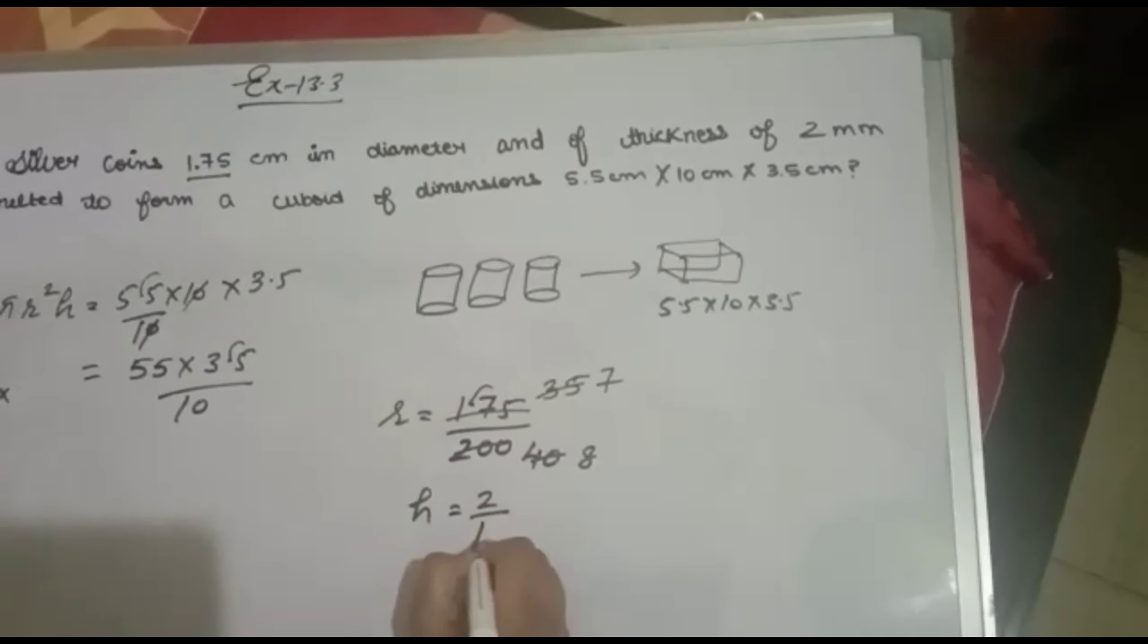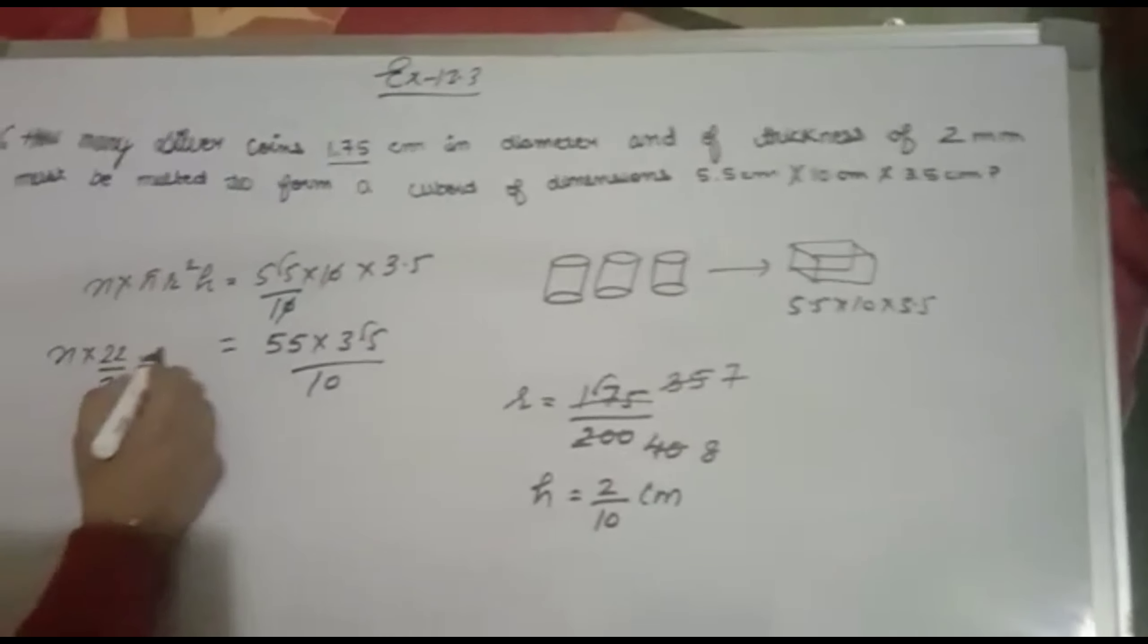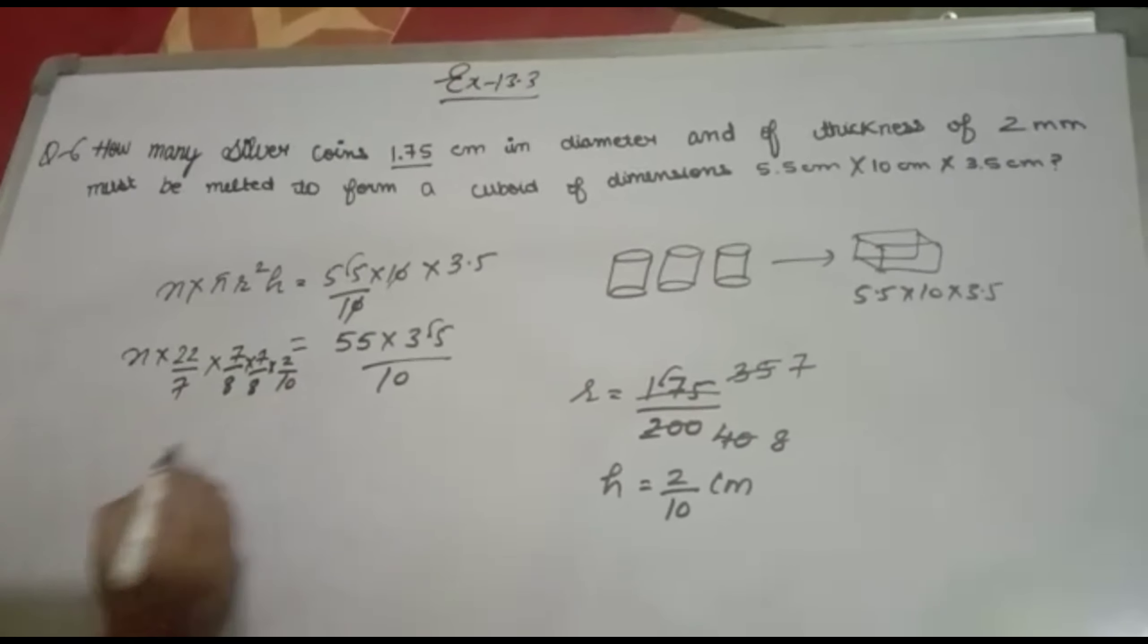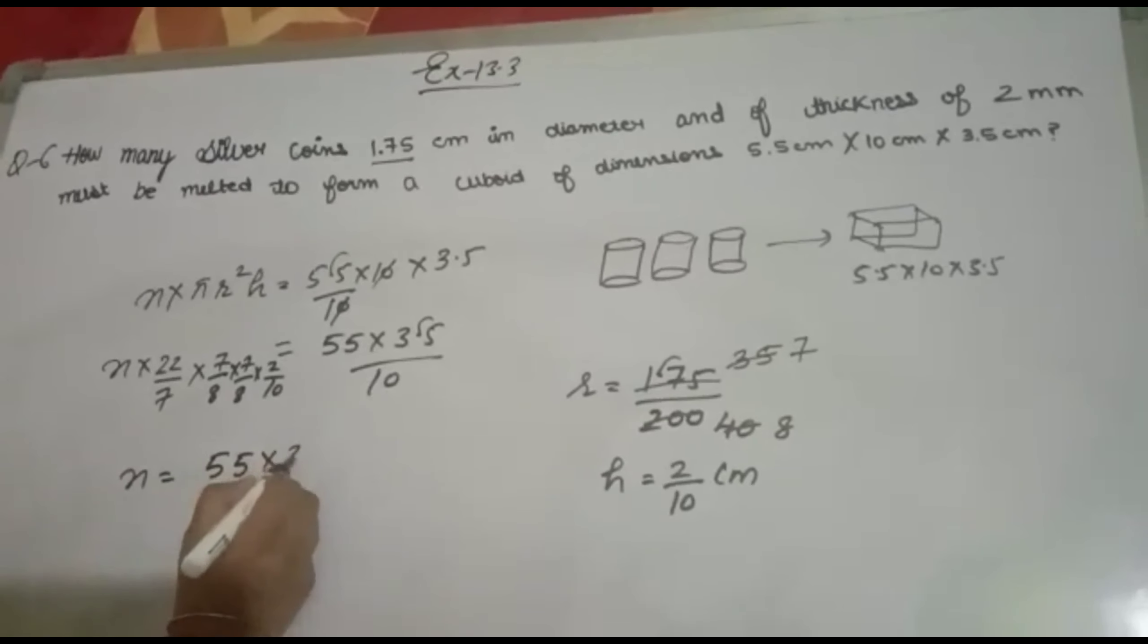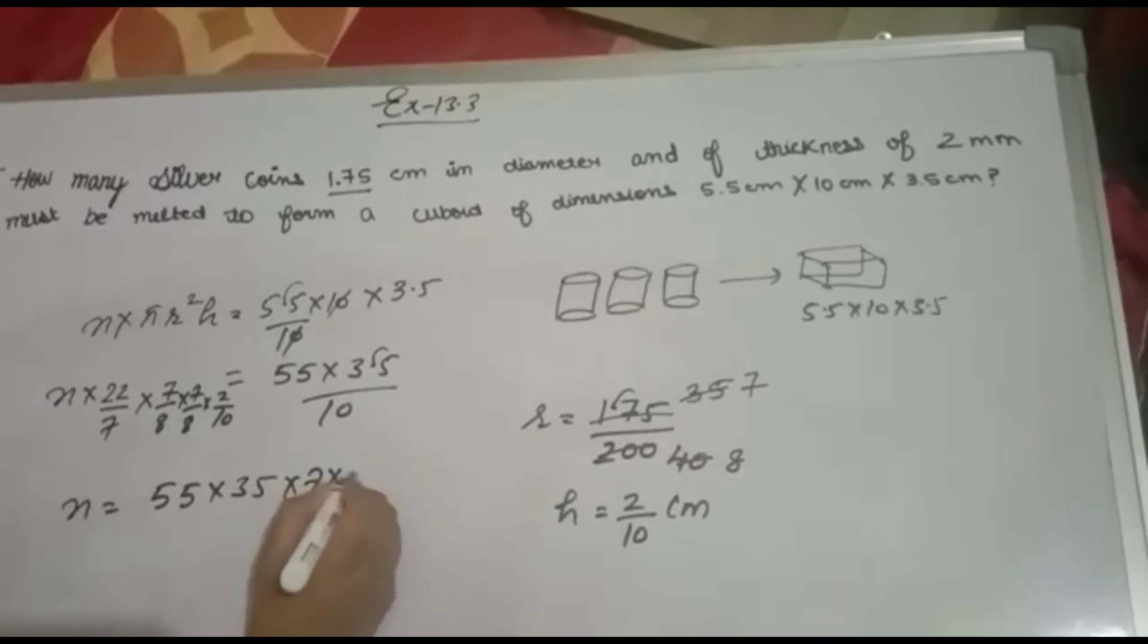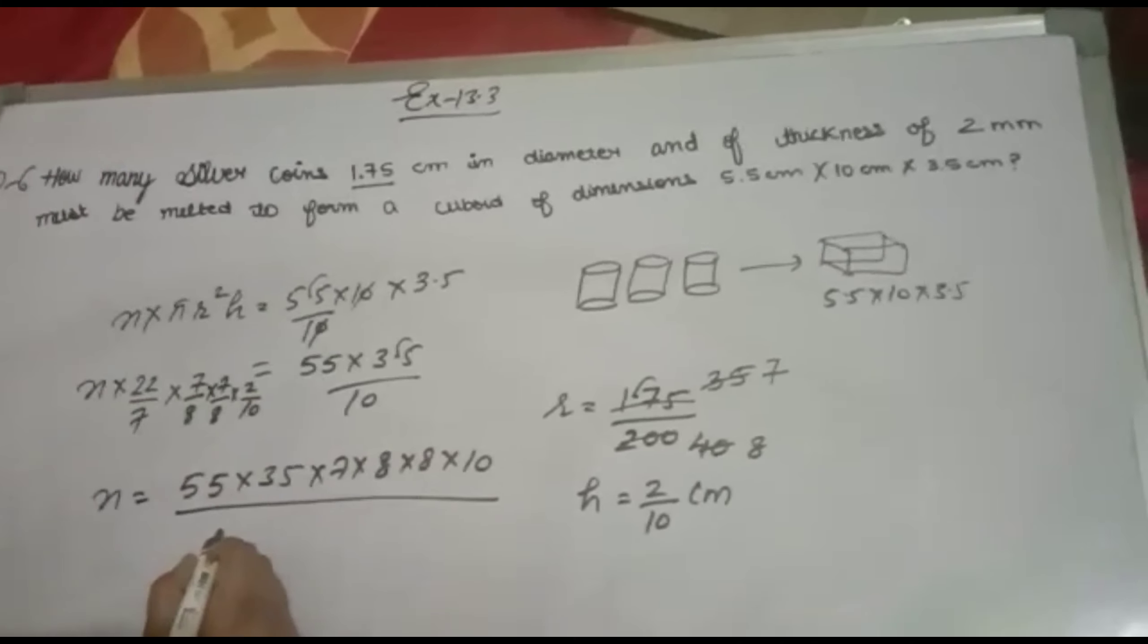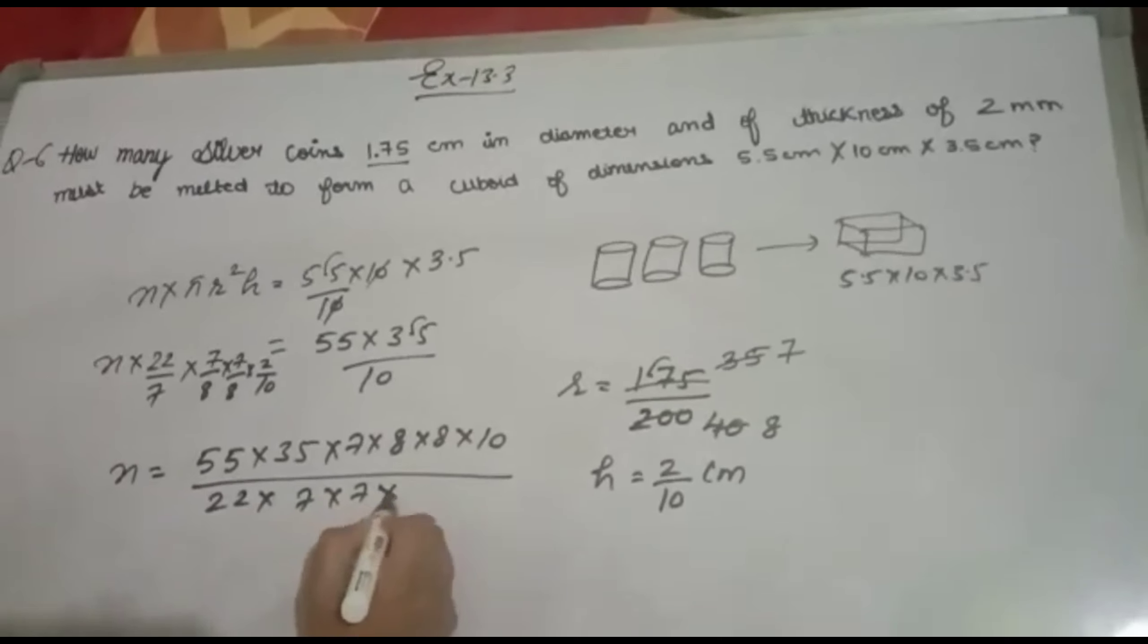Converting 2 millimeters to centimeters: divide by 10, so height = 2/10 cm. Substituting r = 7/8: (7/8)² × 2/10. Now solving: n = (55 × 35)/(7 × 8 × 8 × 10) with reciprocal terms.